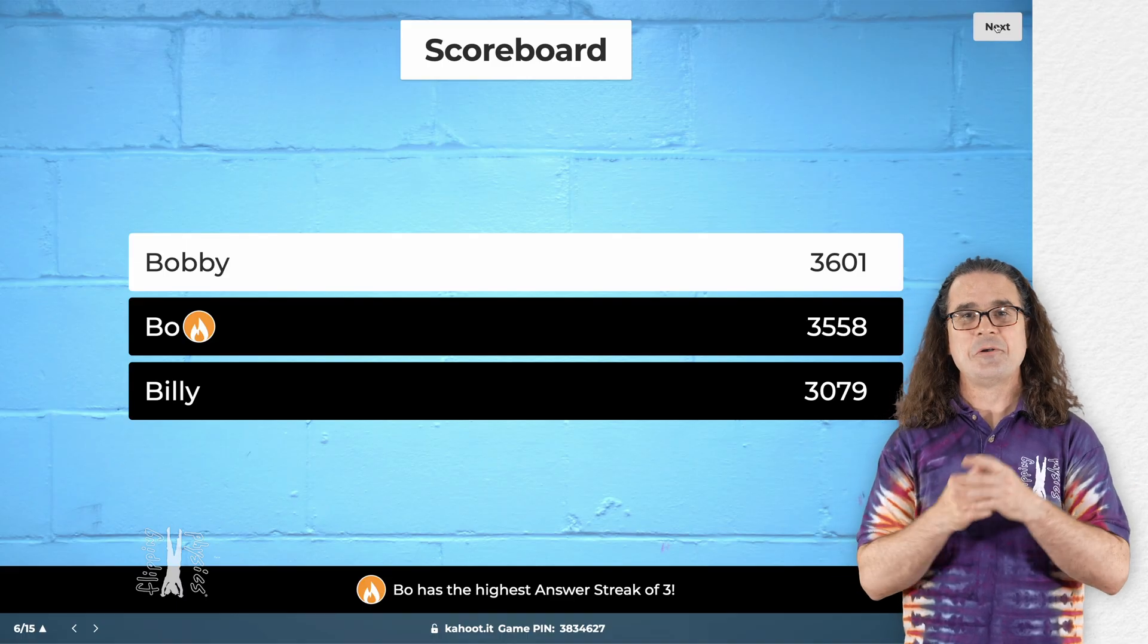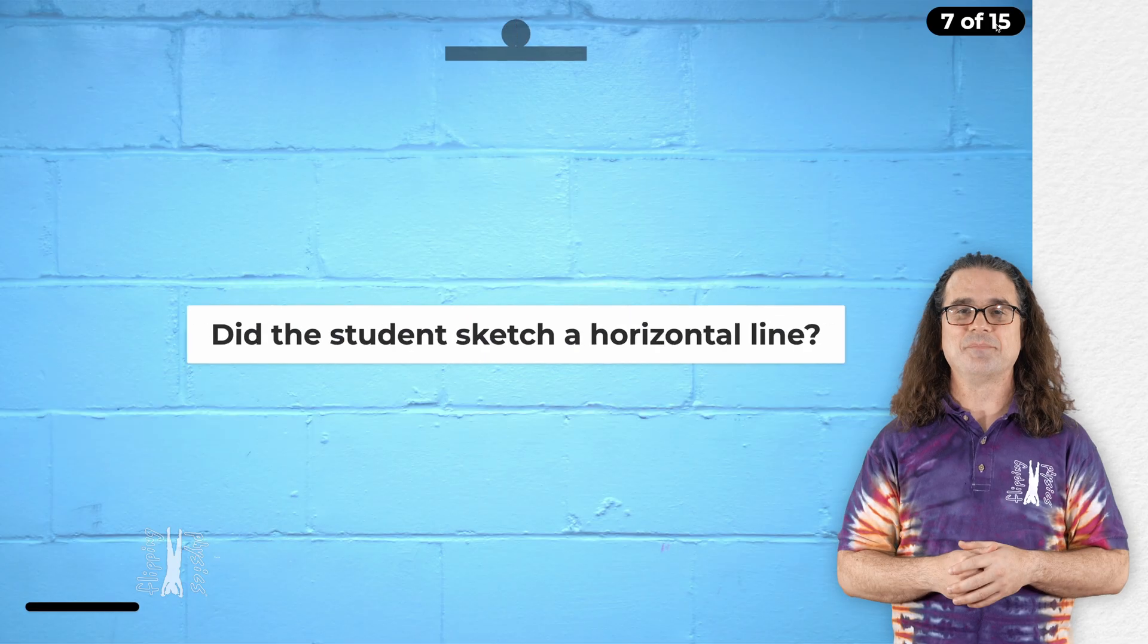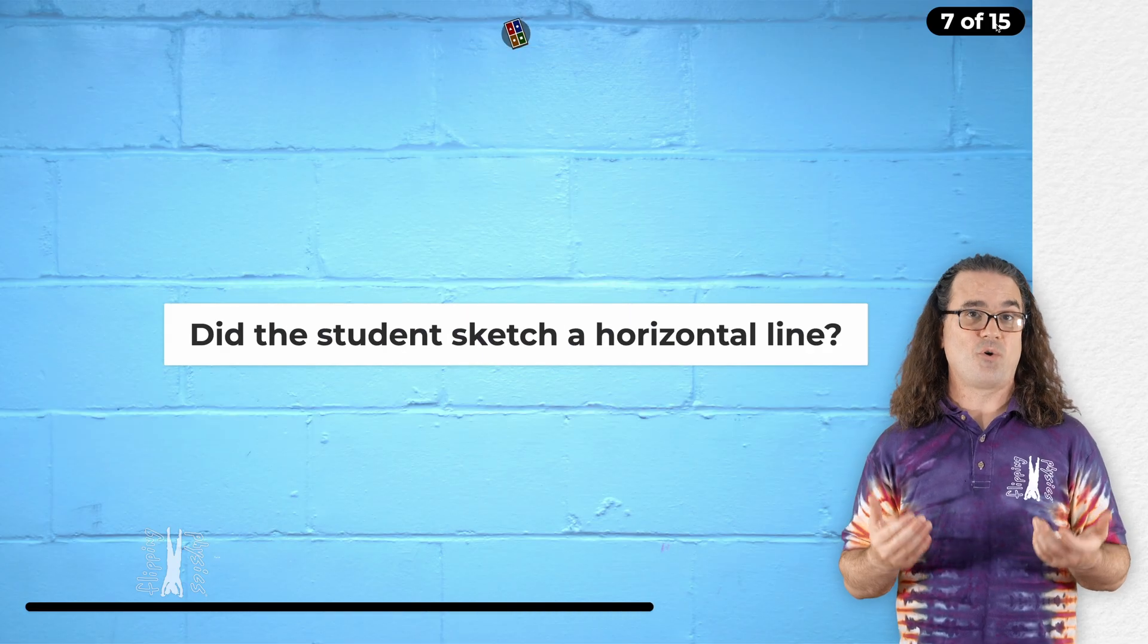And Bobby is still in the lead. Yep. The next question, again, still is, did the student sketch a horizontal line?